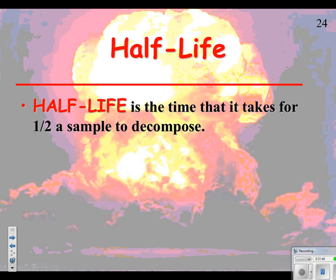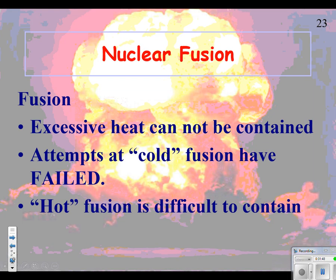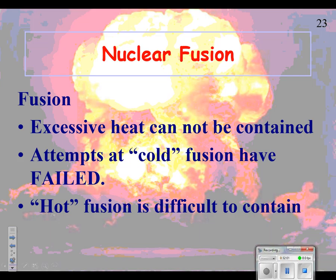Fusion. With fusion we have excess heat that cannot be contained. Attempts at cold fusion have failed. Everybody's tried but can't get it. And hot fusion is really difficult to contain. Basically think of harnessing the sun at the sun's level, like going up to the sun and being able to walk on the sun kind of thing. So it'll be really hard. So half-life. Oh, did I go too fast? I'm sorry. Just keep me on track here. Half-life is where we're going to start next time, so I'm going to stop right now.